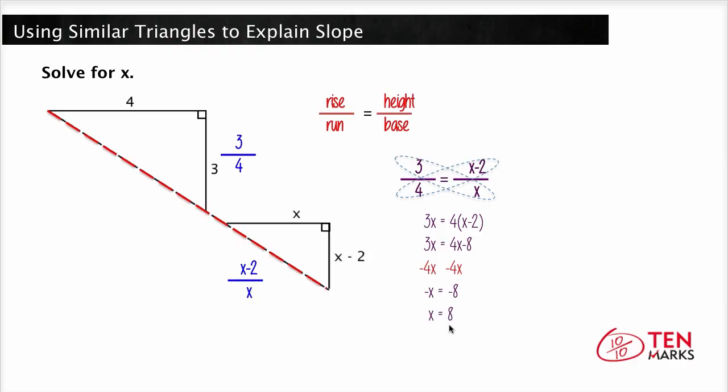Then we're going to take 8 and just plug it back into the variables that we have for this second triangle's height and base. So the base is 8, and the height is 8 minus 2, which is 6. So we can see that the height to base ratio is 6 to 8, and this would simplify to 3 to 4.